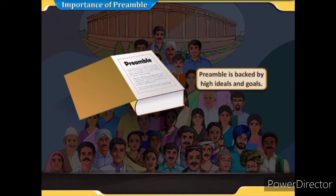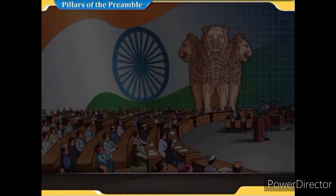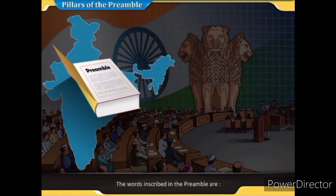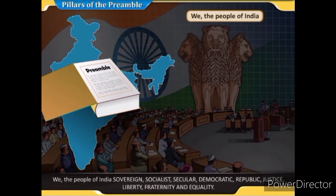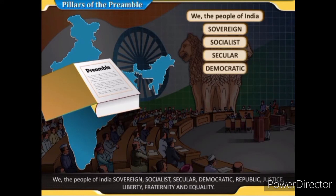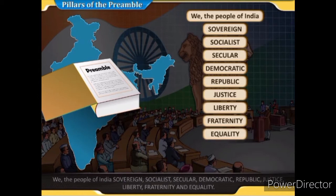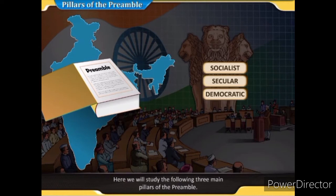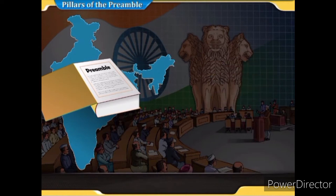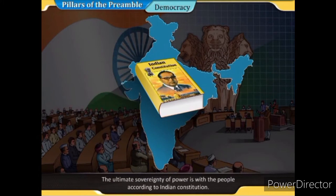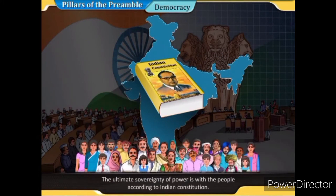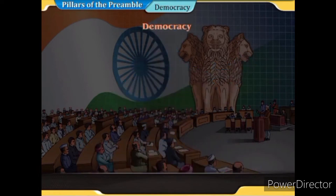The preamble is backed by high ideals and goals. The words inscribed in it are: we the people of India, sovereign, socialist, secular, democratic republic, justice, liberty, fraternity and equality. The three main pillars of the preamble are democracy, socialism, and secularism. In democracy, the ultimate sovereignty of power is with the people — according to the Indian Constitution there is no particular regime of any particular person.